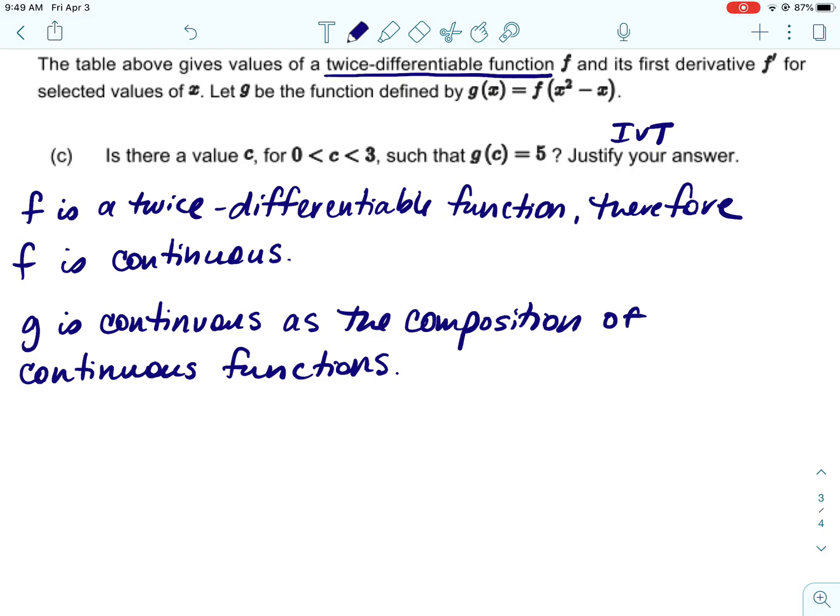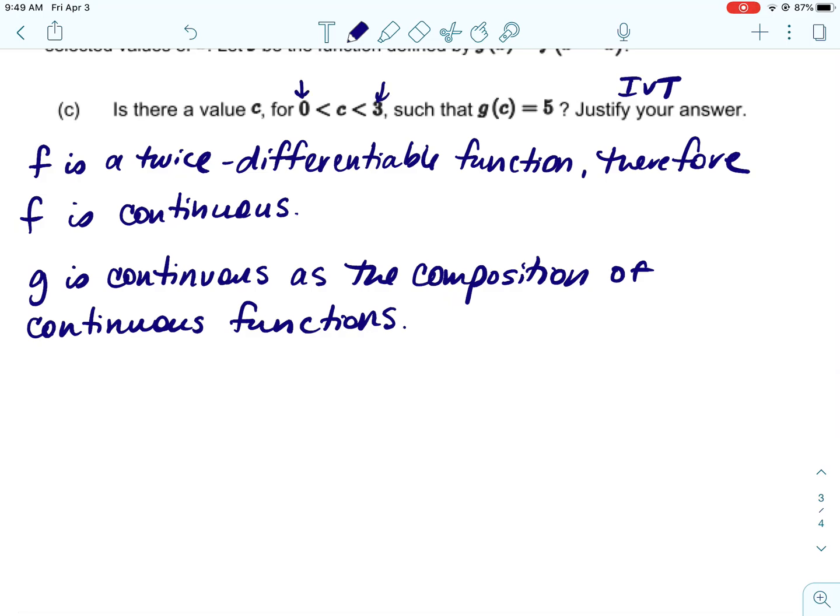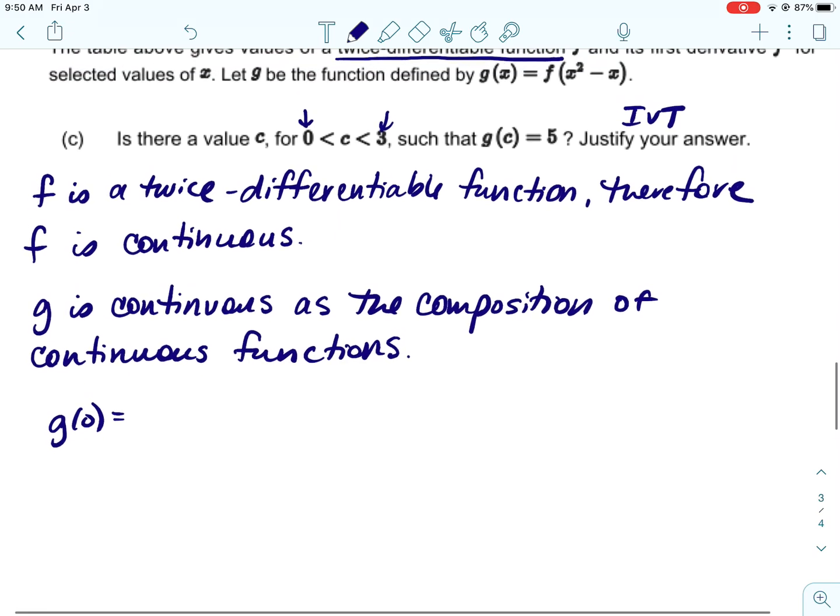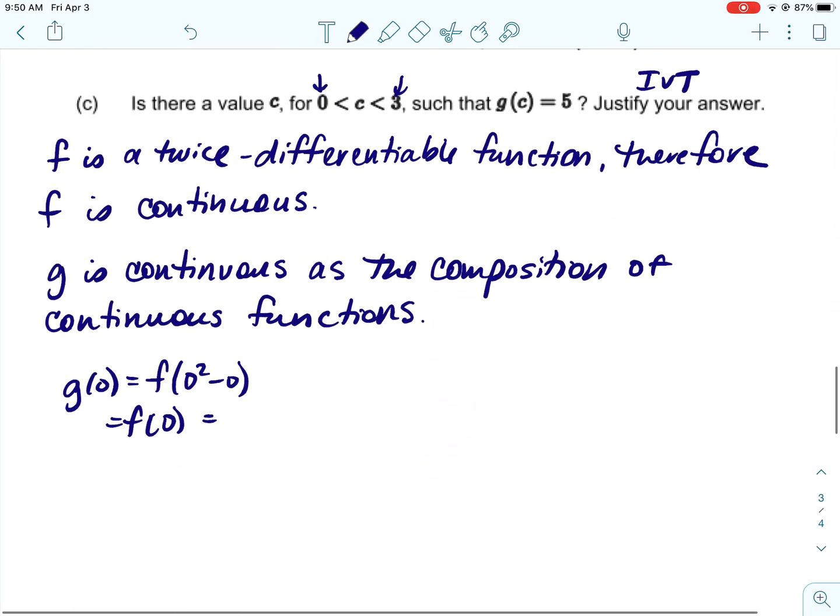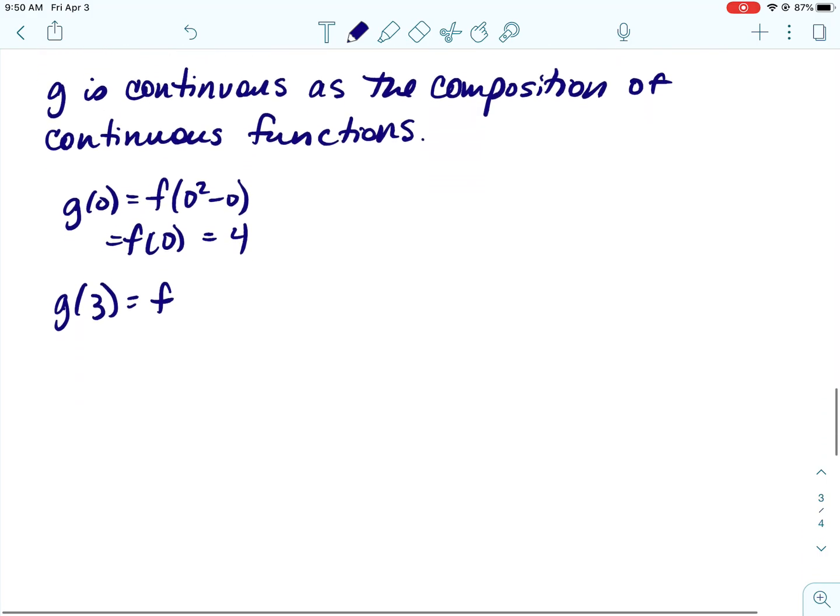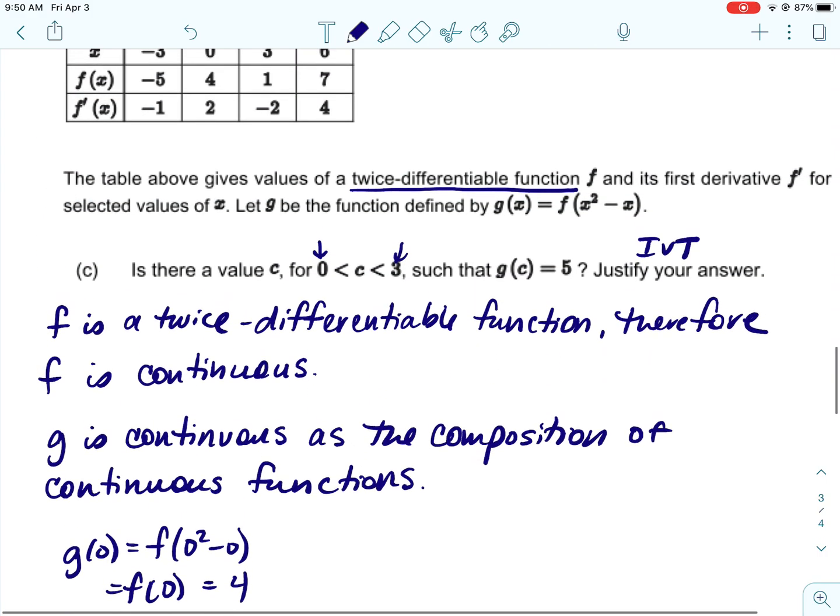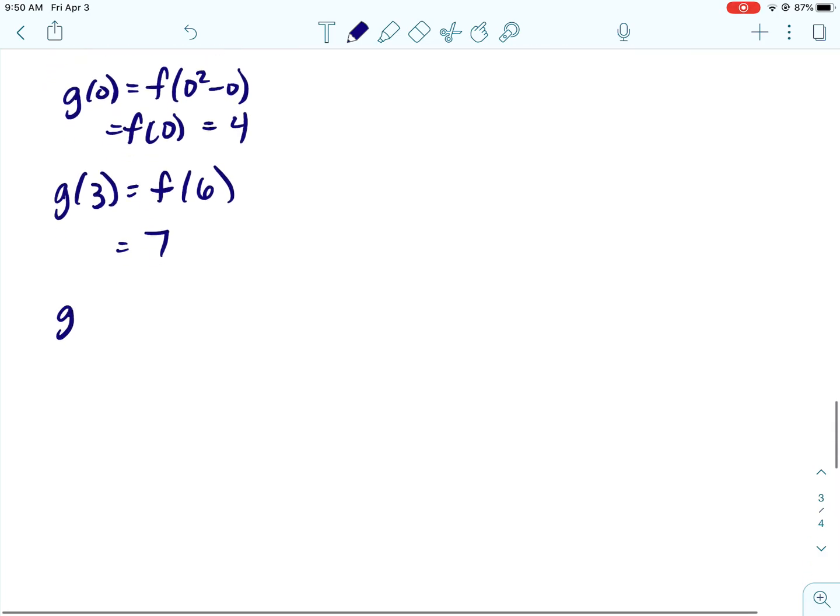Now I think we've dealt with this before and just kind of said together they're continuous, but we need to write that out. So if you have a composition of continuous functions, you have a continuous function. If you have the sum product or difference of continuous functions, you have continuous functions. Alright, the other thing we have to do is use our endpoints of our interval and find g of 0. So that's going to be f of 0 squared minus 0, or f of 0. And we can get that from the table. f of 0 is 4.